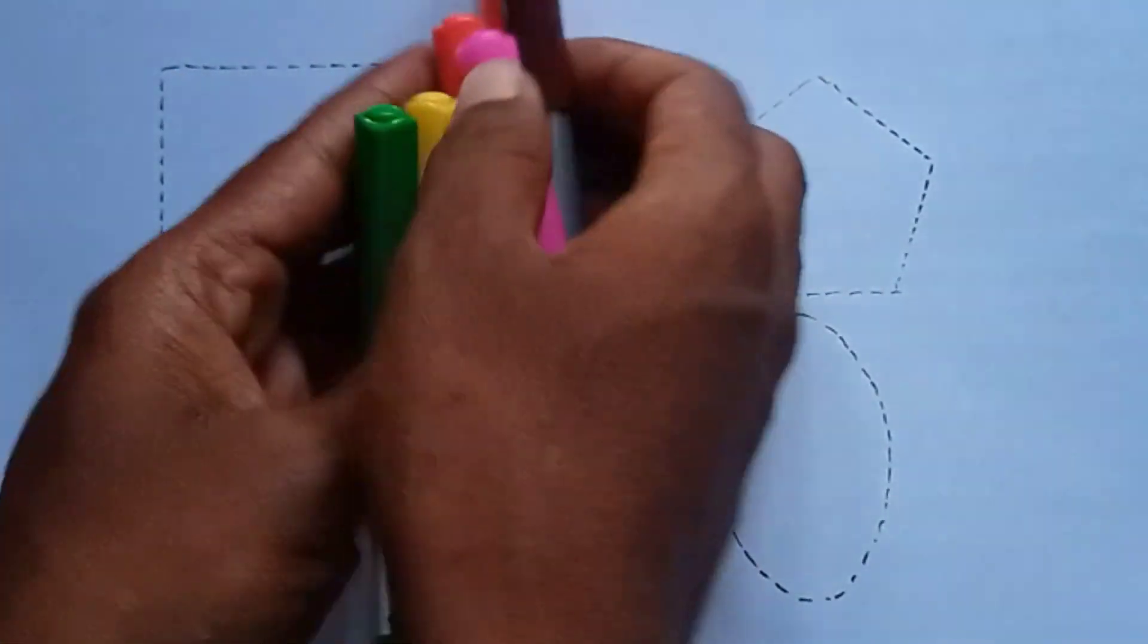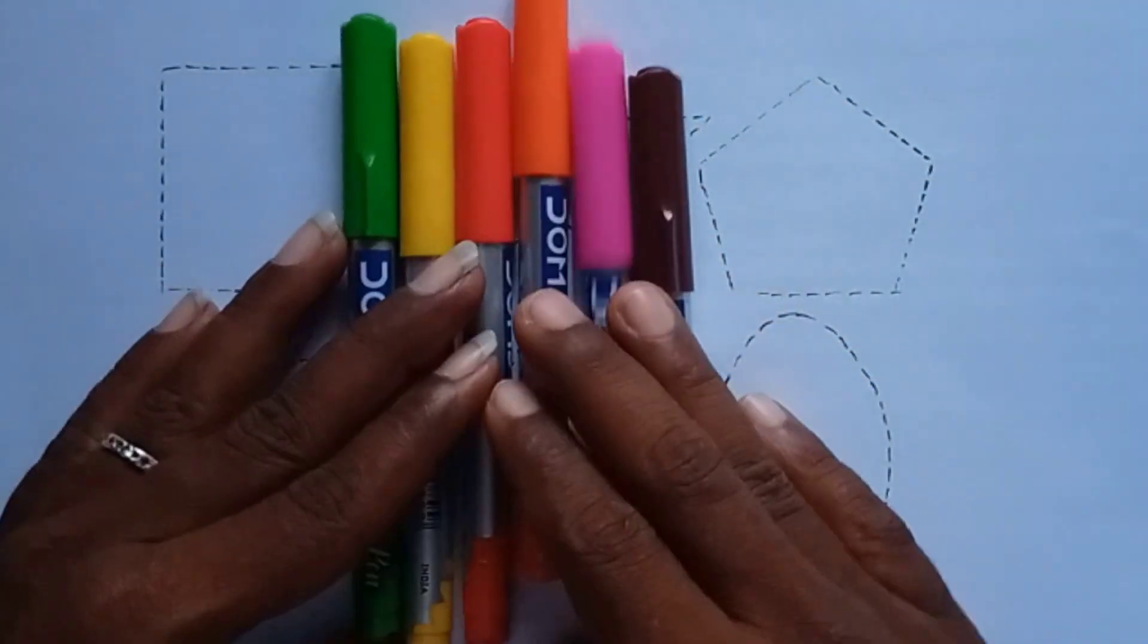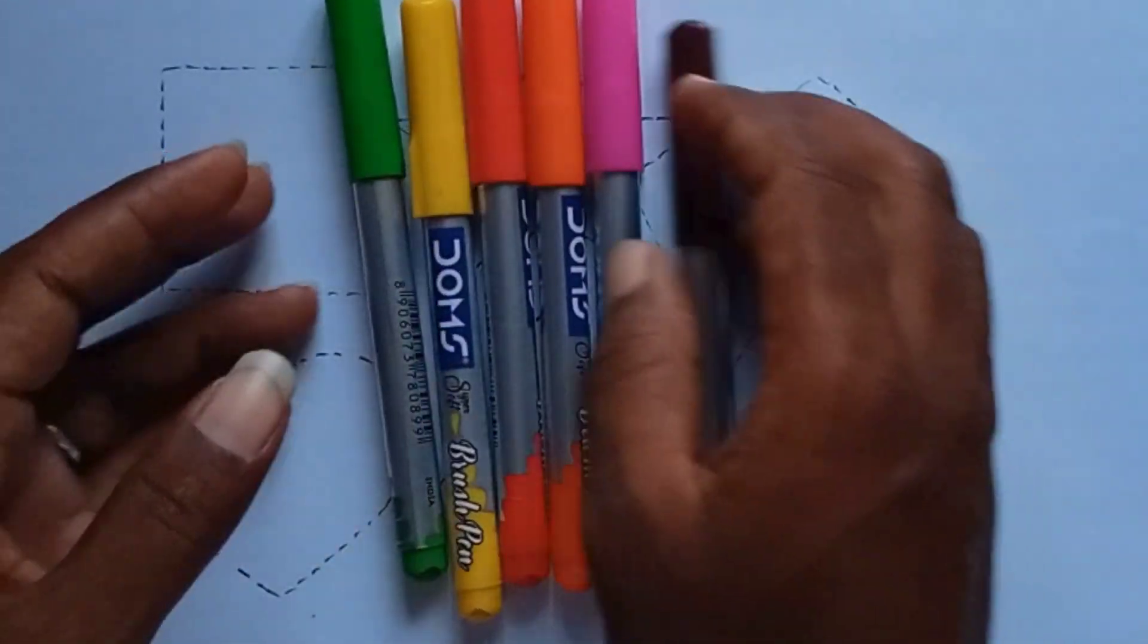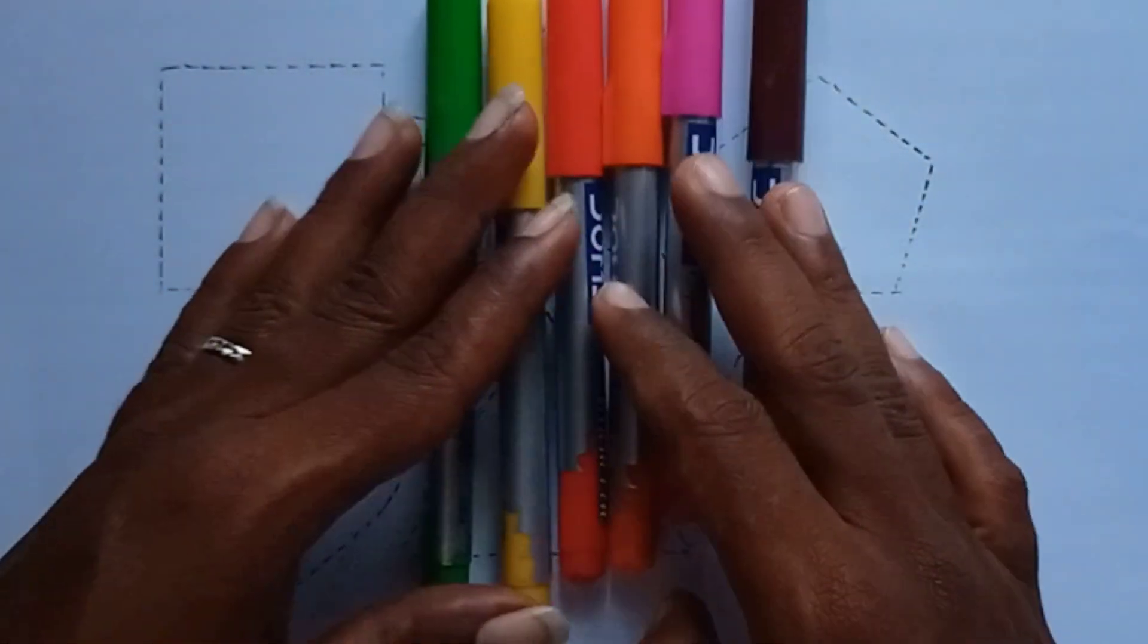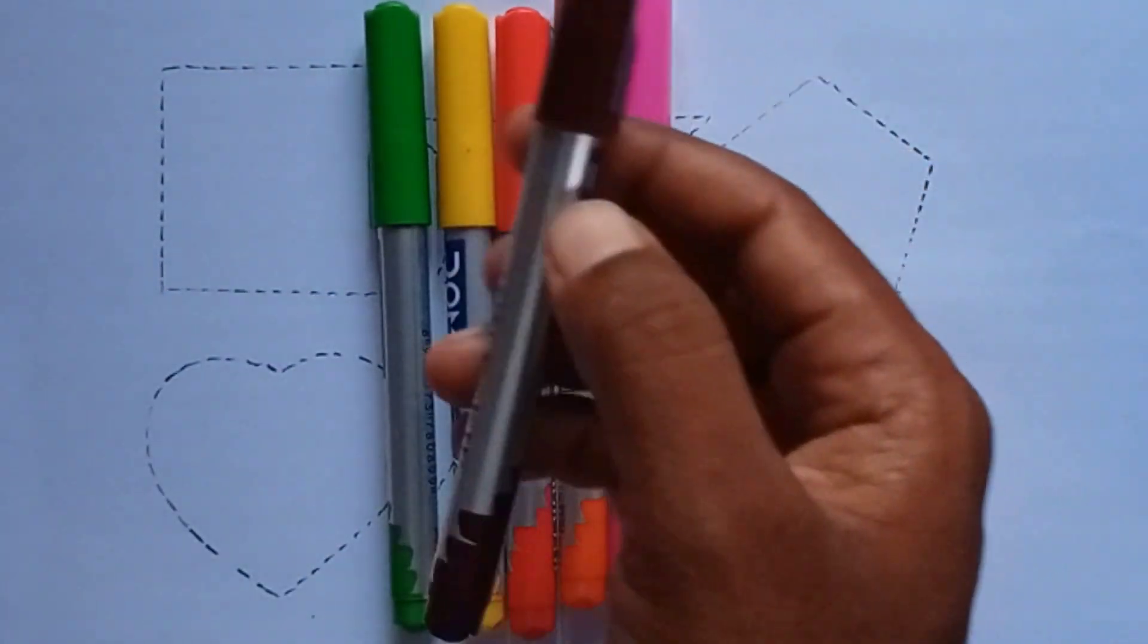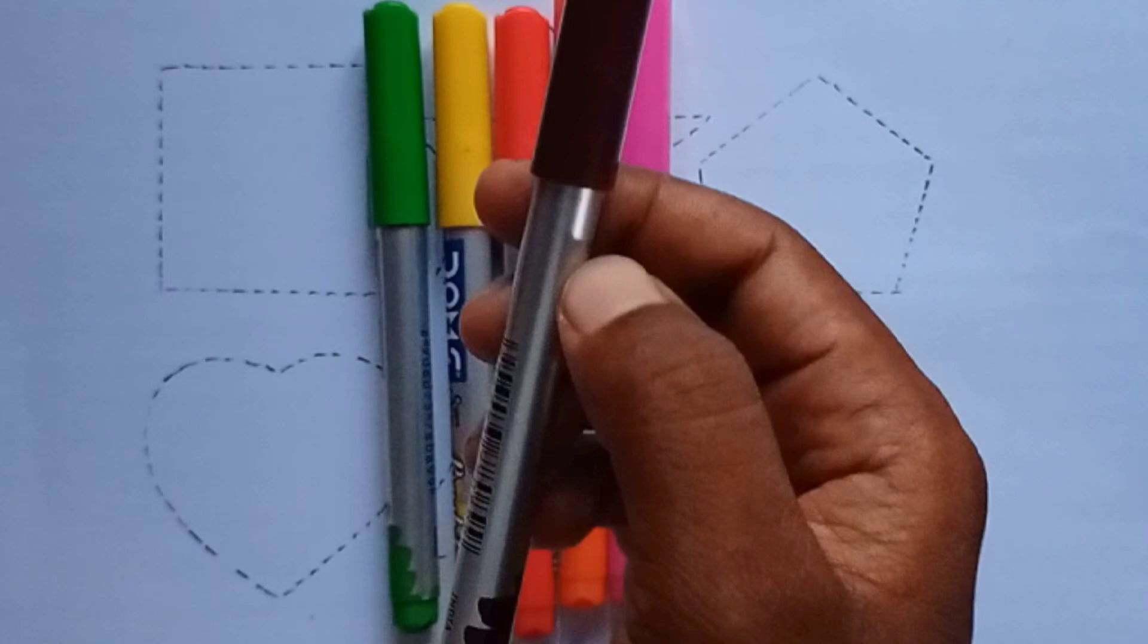Hello kids, welcome everyone to today's class. Today in this video we will learn shapes and colors. Firstly, in colors name, this is brown color.